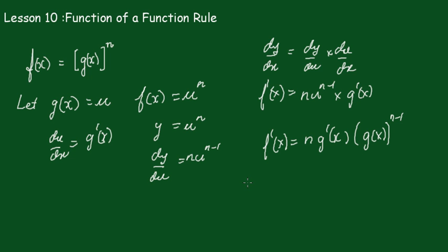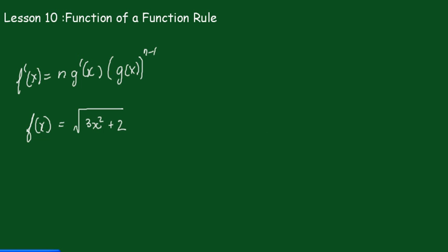Now let's have a look at an example of how this is done. We've got the function f(x) equals the square root of 3x² plus 2. As before, we'll put this back in index form, so that becomes (3x² + 2) to the power one half. Now 3x² + 2 is our g(x).